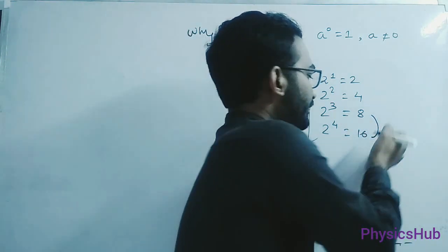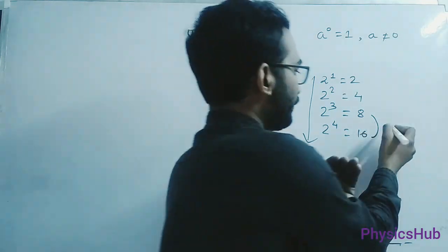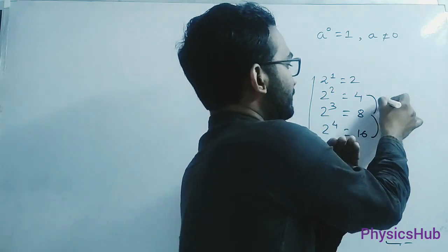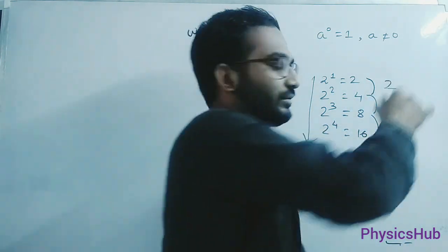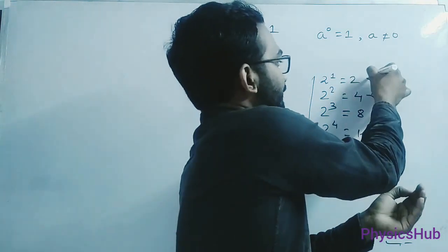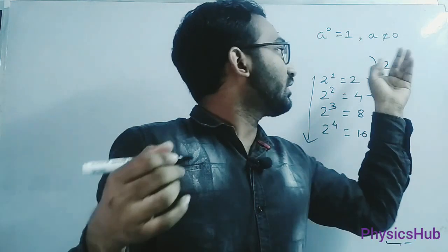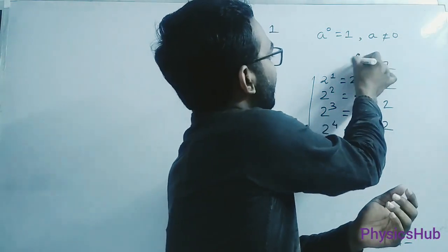Now just look into this. From here to here, what is the result of the division? 16 by 8 is 2. Result of this division? 2. Result of this division? 2. Result of this division? Also 2. As you can see, if this result of division is 2, then it must be 1.